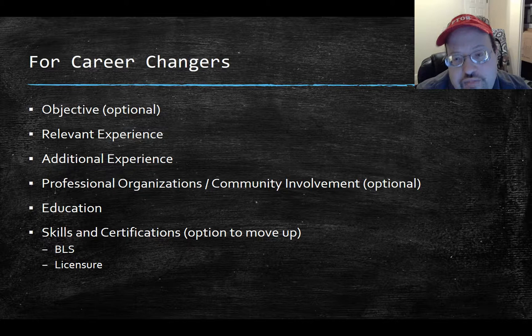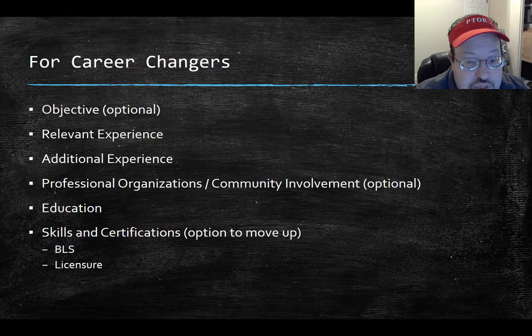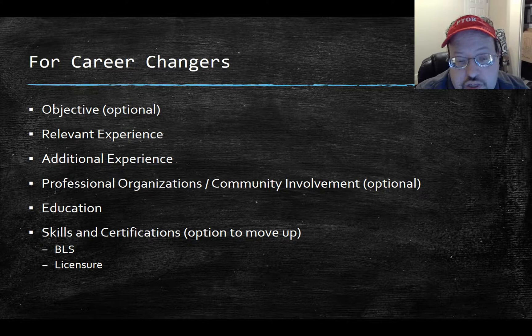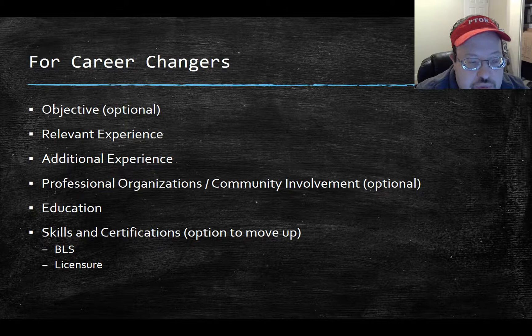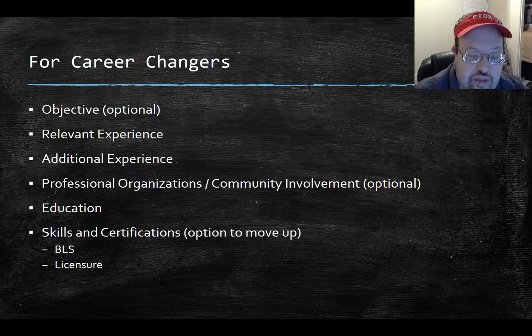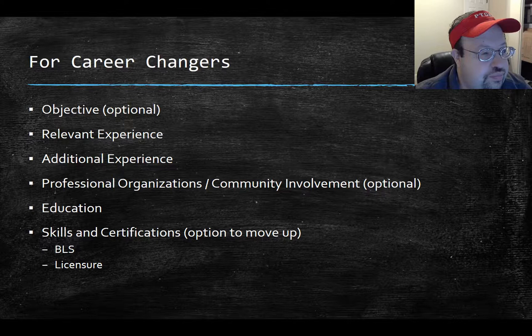For career changers, you could have your objective, which is optional. When we look at this more for 170, the objective will be required and highly tailored to that specific organization. Put any relevant experiences at the top, then any additional experiences regarding that position. Professional organizations or community involvement are optional — I'd suggest putting the American Physical Therapy Association if you're a member. Then education, including College of the Sequoias Physical Therapy Assistant Program, and skills and certifications. This ordering is important because career changers typically have a lot of experience and customer service, and you want to distinguish yourself from a recent student. But as everyone graduates and works two or three years, the playing field becomes pretty much even.